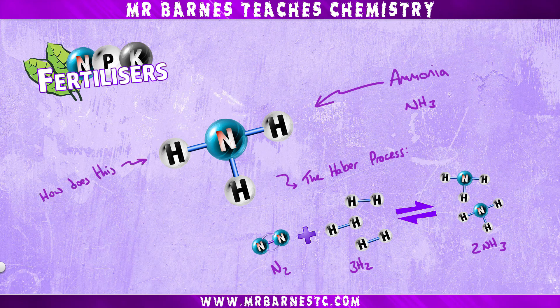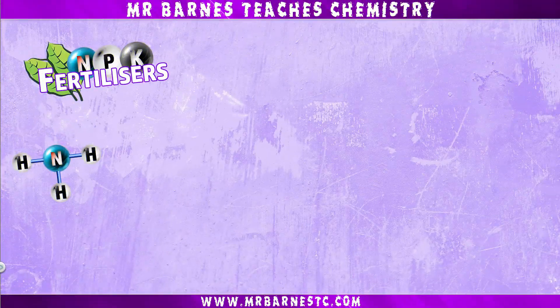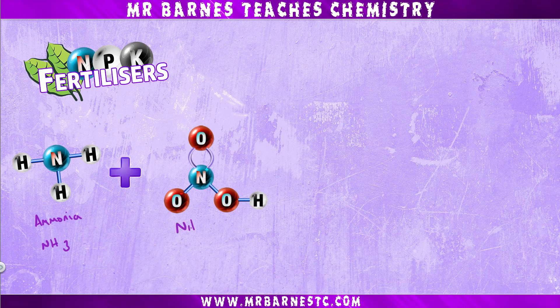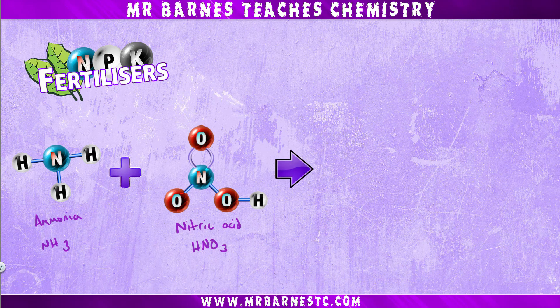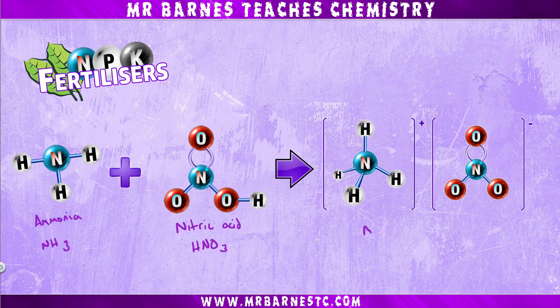So how does this help us form our fertilizer? We start off with ammonia NH3 and react it with nitric acid HNO3. When this happens it forms ammonium nitrate, which has the formula NH4NO3 — and that ammonium nitrate is the fertilizer that we want to make.